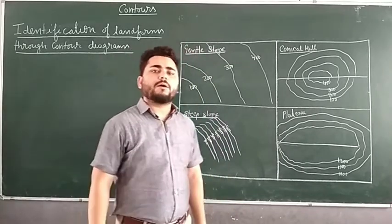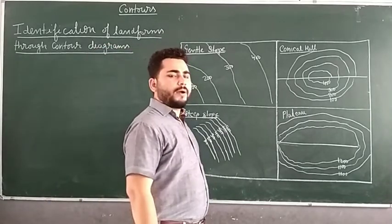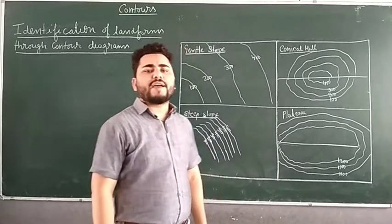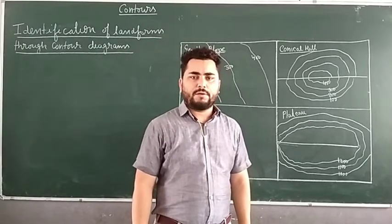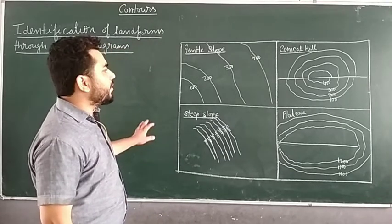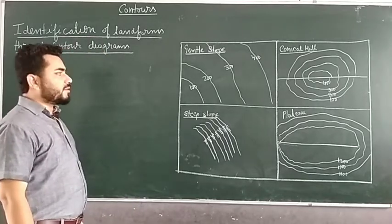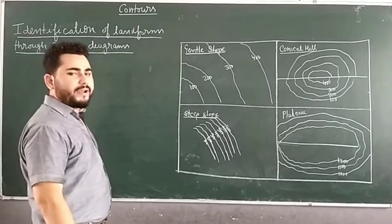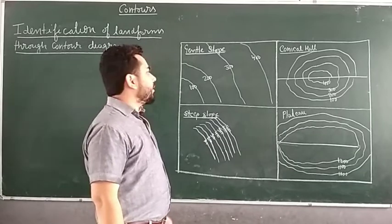In board exams, one toposheet is given and on that toposheet contour lines are drawn. On the basis of the pattern of those contour lines, they may ask which type of landform that particular toposheet is having. That question may be asked for one mark or two marks. Today we are going to understand how we can identify different landforms on the basis of the patterns of contour lines on our toposheet.